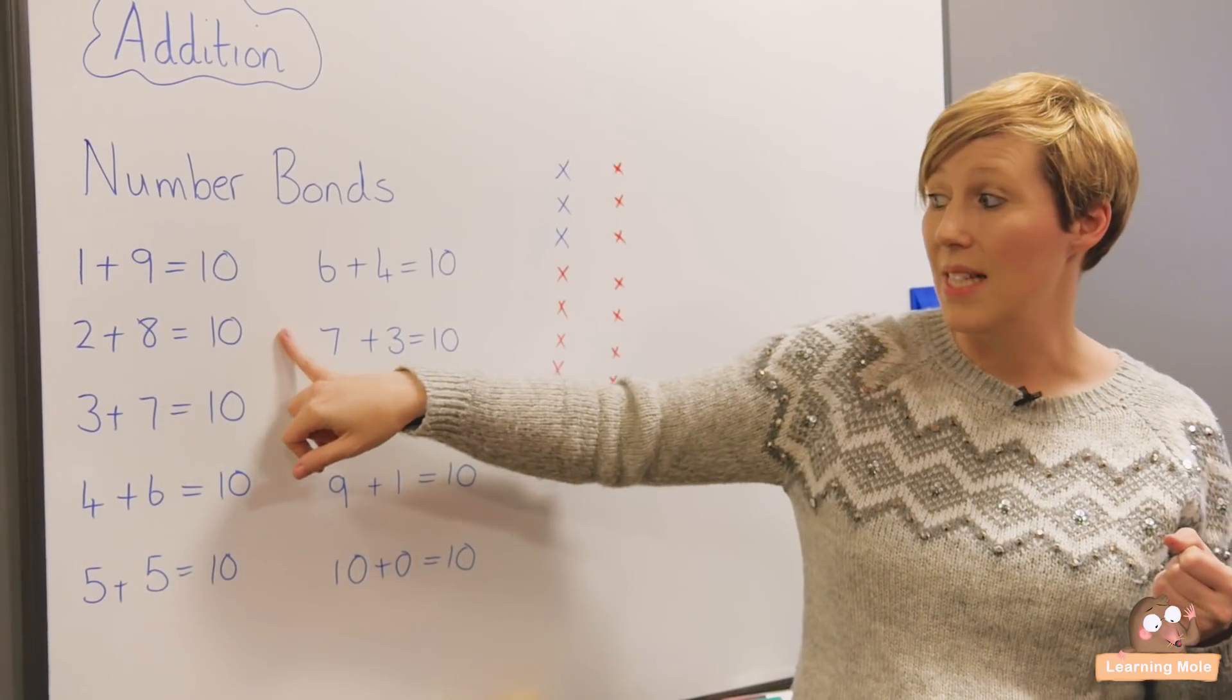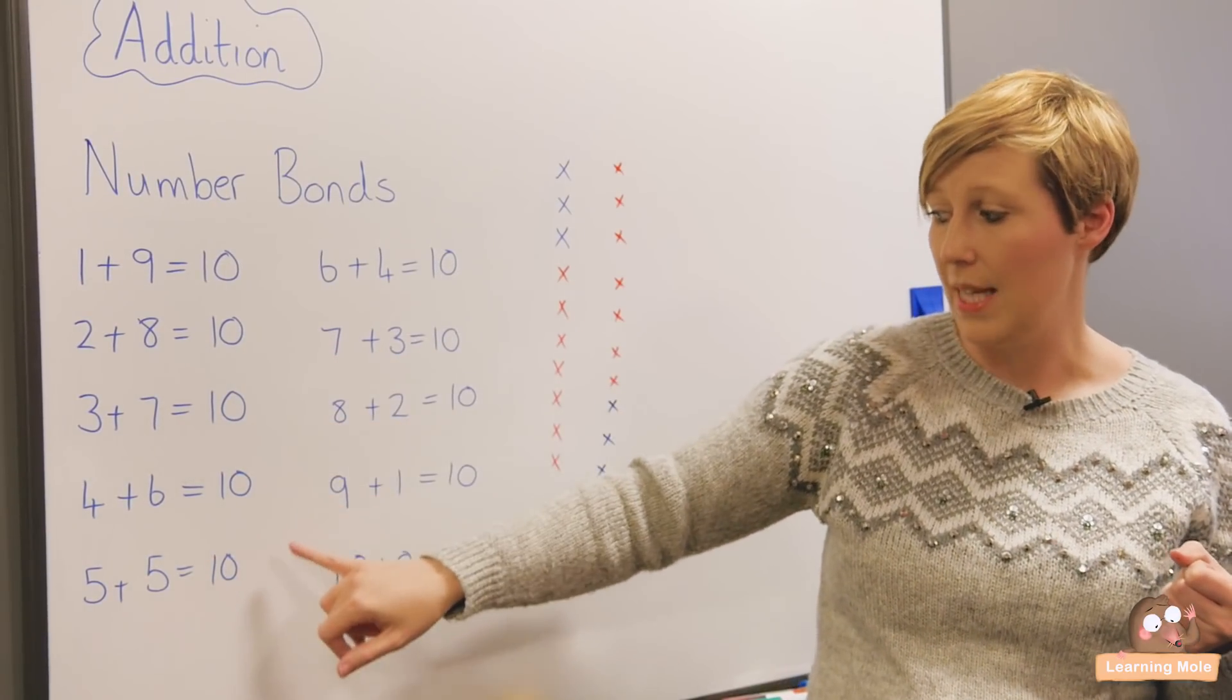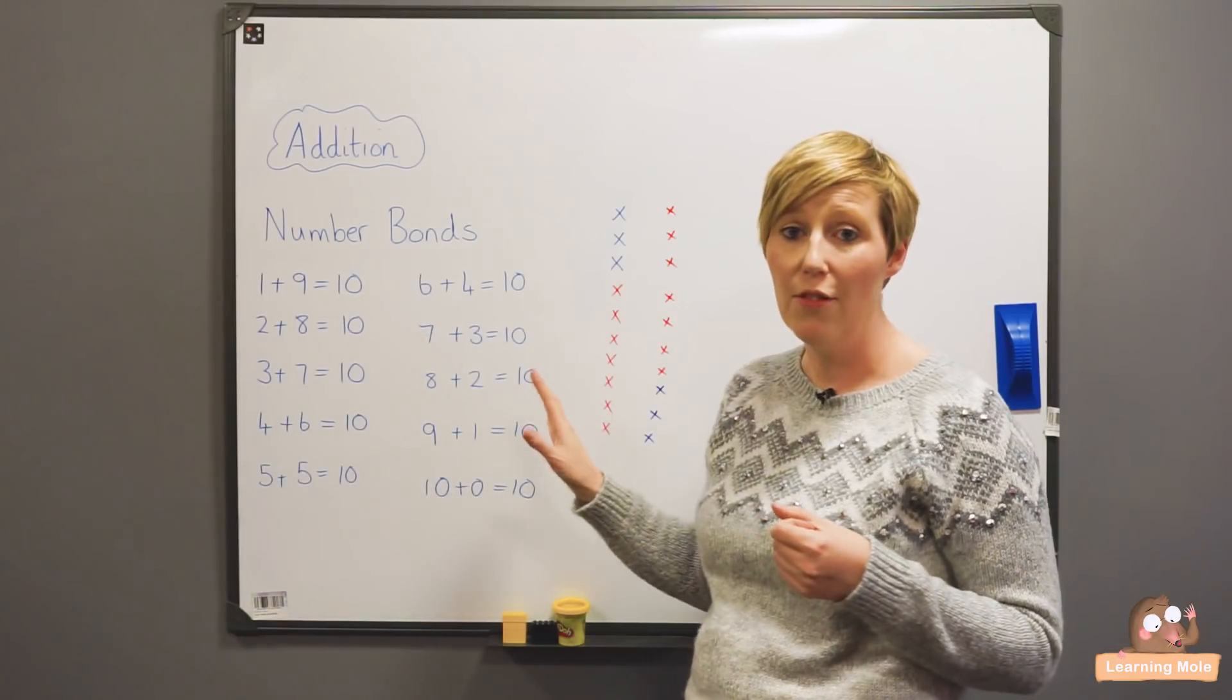So one plus nine, two plus eight, three plus seven, four plus six, five plus five, and then obviously that reverse.